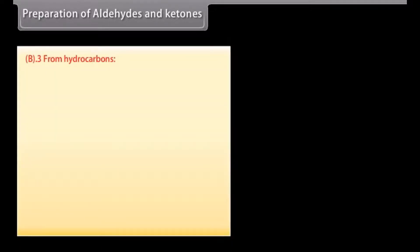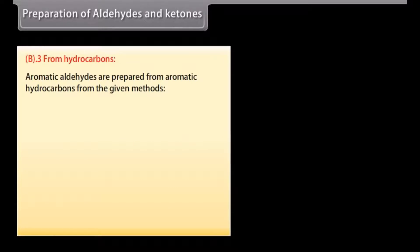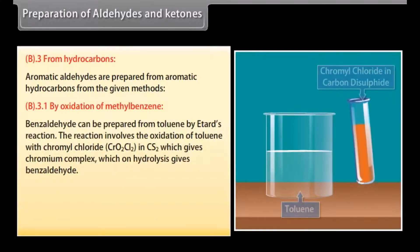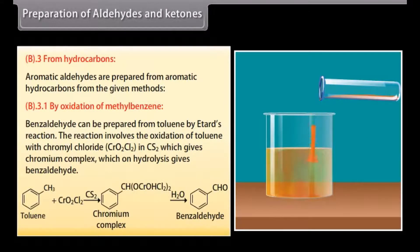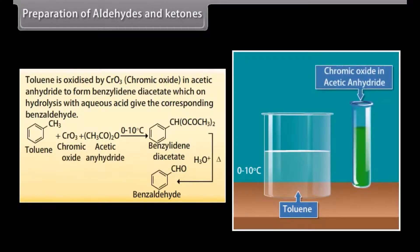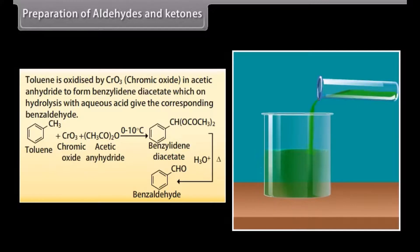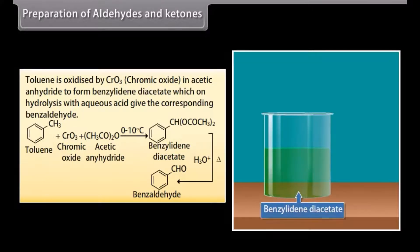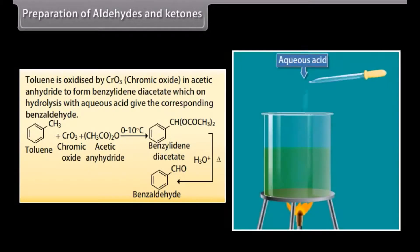Preparation of aromatic aldehydes from hydrocarbons. Aromatic aldehydes are prepared from aromatic hydrocarbons by oxidation of methylbenzene. Benzaldehyde can be prepared from toluene by Étard's reaction, which involves the oxidation of toluene with chromyl chloride in carbon disulfide, giving a chromium complex that on hydrolysis yields benzaldehyde. Toluene is also oxidized by chromic oxide in acetic anhydride to form benzylidene diacetate, which on hydrolysis with aqueous acid gives benzaldehyde.